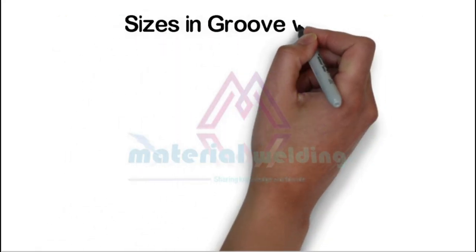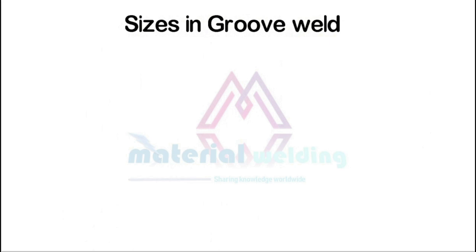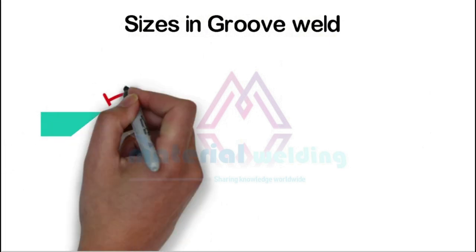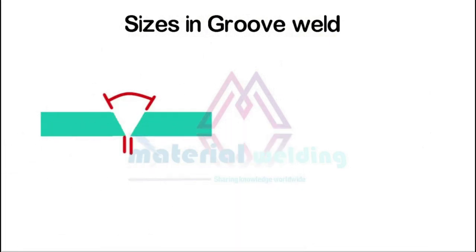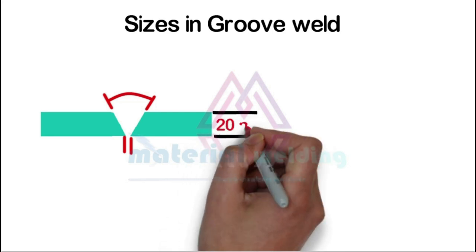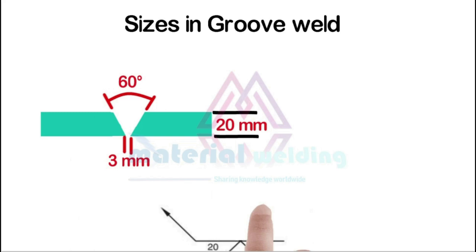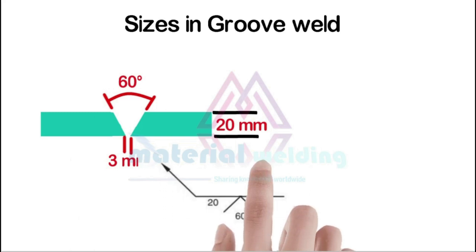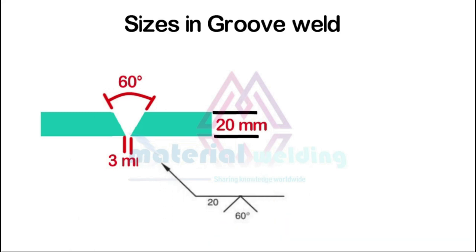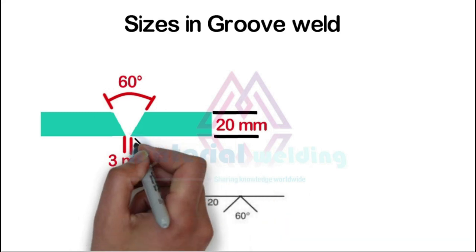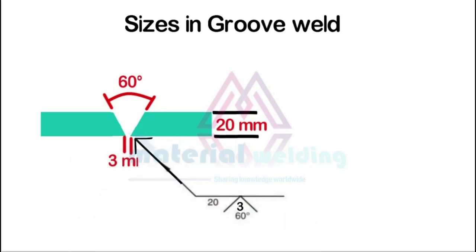Let's learn reading weld size in groove welds. Here an example of a single V weld is shown. As we see on the left side, the groove size is 20 mm. Inside the weld symbols are the dimensions of the groove — here 3 mm as the root gap and 60 degrees as the included angle of the groove.